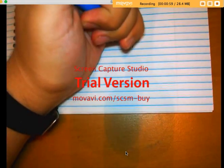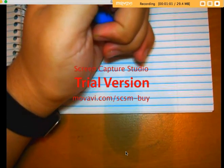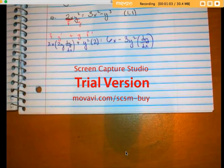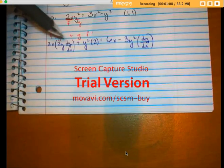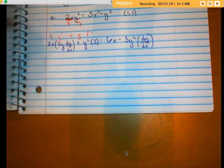This is going to be 6x and this is going to be minus 3y squared times dy dx. Again, I don't do that for x, its derivative is 1. As obnoxious as this looks, all I've got to do now is plug in 1.